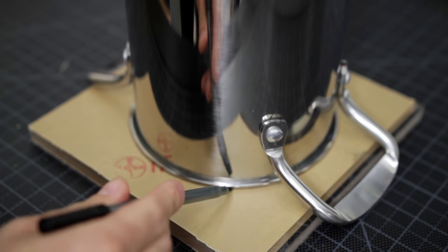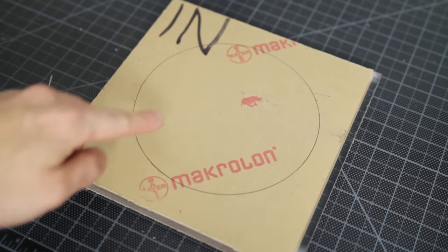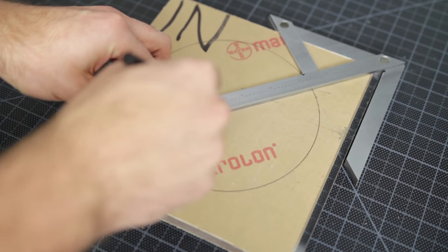I start by tracing the outer diameter of the pot as a guideline, as the pot was not completely cylindrical. I then find the center of the stock by using a center finder and mark a line from two points.